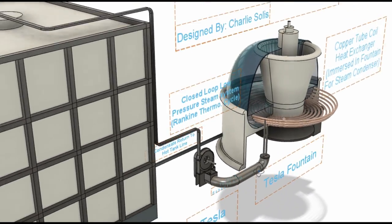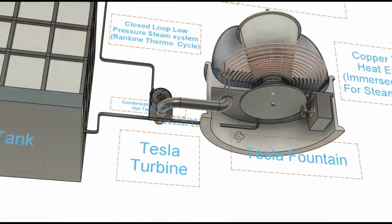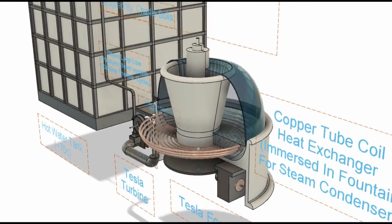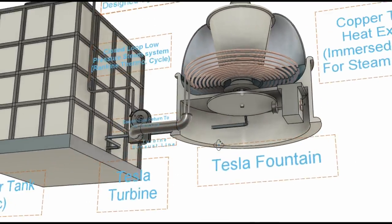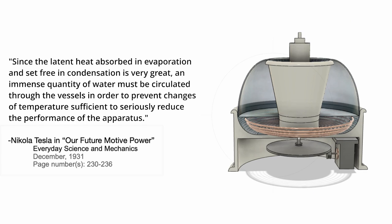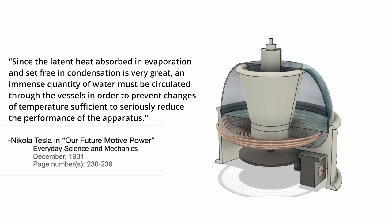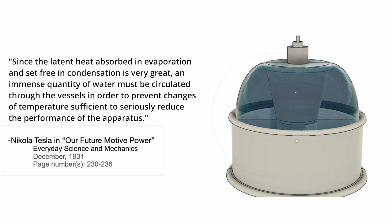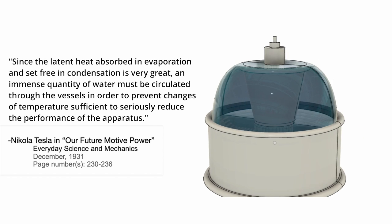If it requires too much energy to circulate the cooling medium, which cools the condensing section, the whole system is bunk, and he specifically talks about this in his article, Our Future Mode of Power, which a link to a copy of it can be found in the description. Tesla is quoted, since the latent heat absorbed in evaporation and set free in condensation is very great, an immense quantity of water must be circulated through the vessels in order to prevent changes of temperature sufficient to seriously reduce the performance of the apparatus.